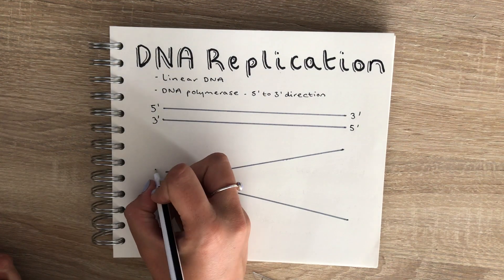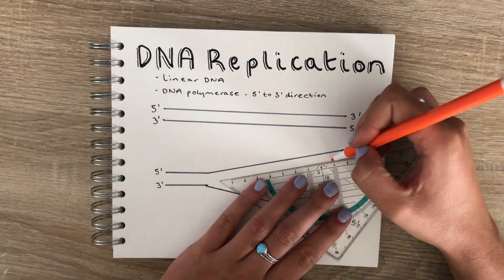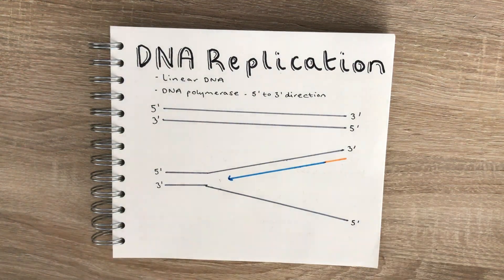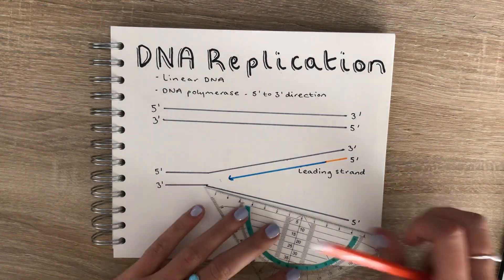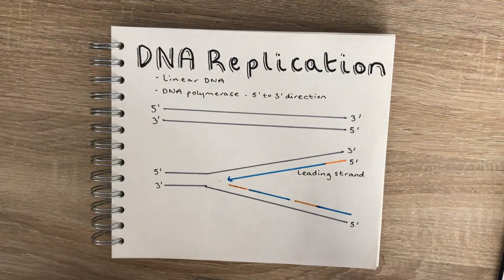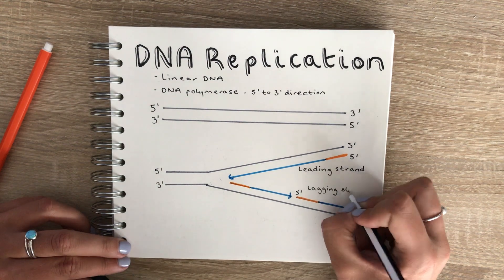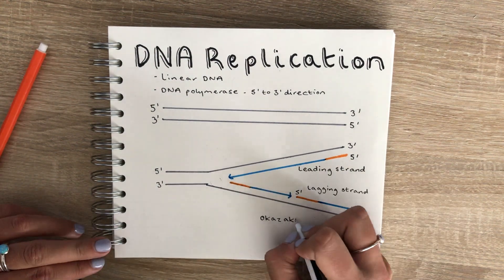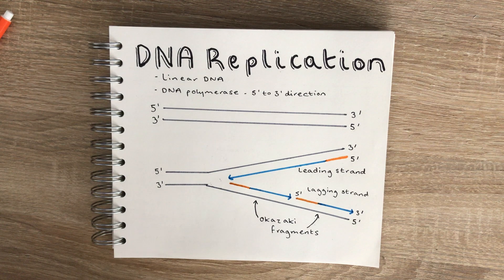The new strand that runs 5' to 3' towards the replication fork is made in a continuous manner, and this is called the leading strand. The other strand, which runs away from the fork, is a bit trickier. Instead, it is produced in smaller pieces known as Okazaki fragments, and this is known as the lagging strand. Each of the fragments starts with its own RNA primer.